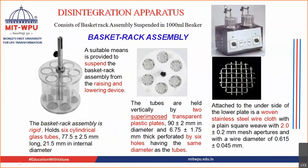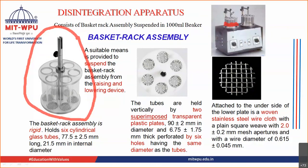The disintegration apparatus consists of a basket rack assembly placed inside a 1000 ml beaker. The basket rack assembly is very rigid and sturdy in nature, and it holds six cylindrical tubes. The dimensions of each tube are: length 77.5 mm and internal diameter 21.5 mm.